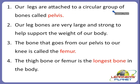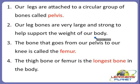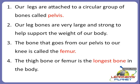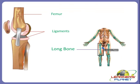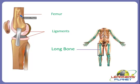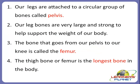Our legs are attached to a circular group of bones called the pelvis, and our leg bones are very large and strong enough to help support the weight of our body. The bone that goes from our pelvis to our knee is called the femur. The thigh bone or femur is the longest bone in the body - the bone going from the pelvis to the knee is termed as the femur.